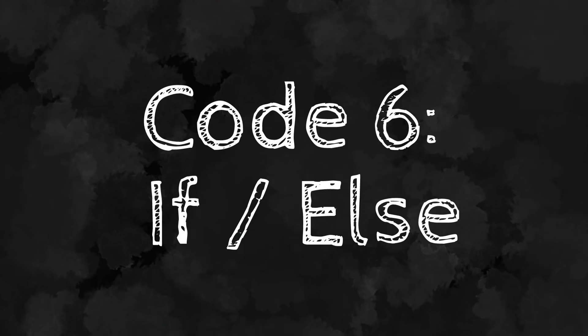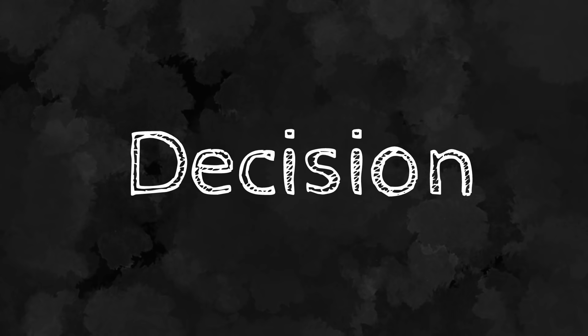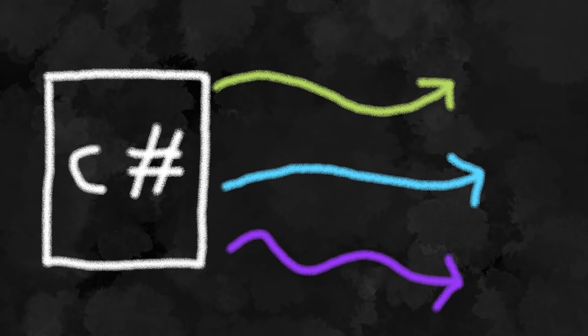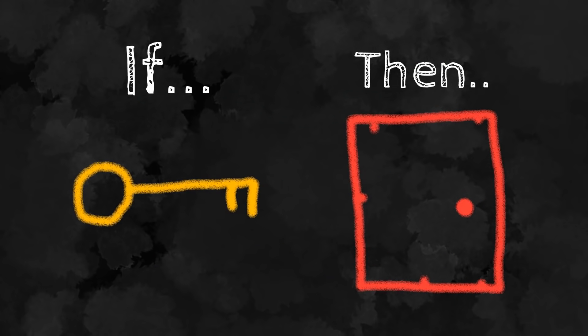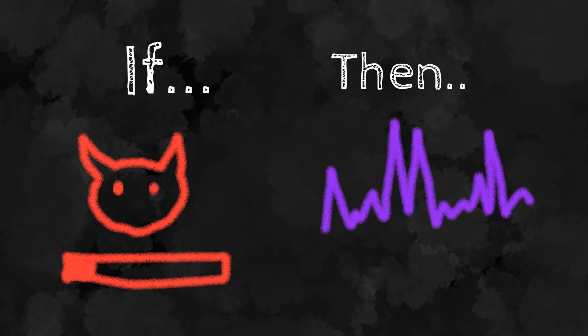Piece of code number six is if-else blocks — a huge one. These let us code decisions inside our game, meaning a single C-sharp script can have different outcomes. For example, you might want to open a secret door if the player finds a special key, or play epic music when a boss is almost dead. These are perfect scenarios for an if-else statement.